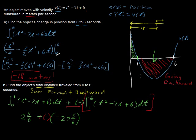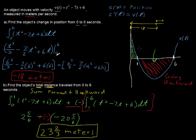So in the end, you get 23 and 2/3 meters total distance traveled. So the object, now we know that the object went forward. It went forward a total of 2 and 5/6 meters forward. And then it went 20 and 5/6 meters backward. And you add those for the total distance traveled.